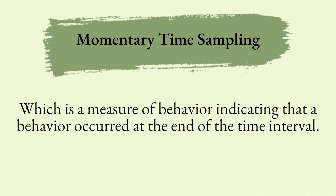Last but certainly not least is momentary time sampling. For this kind of time sampling, you're going to indicate that the behavior happened right at the end of the interval. So if you're doing a segment of five minutes, you only indicate that the behavior happened right at that five-minute mark. This is super helpful when you're strapped for resources, you can't watch that behavior all the time, maybe you've got a big group or you're taking data on so many other things that it's not a priority to track it throughout.